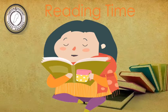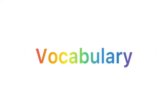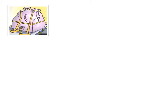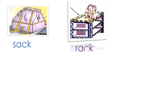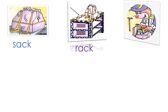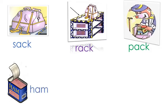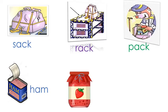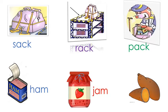In the beginning, let's review the words that we learned last time. Are you ready? That's great. Let's start with the first word: Sack. Rack. Where is the sack? The sack is on a rack. Pack. Ham. Jam. And the last word — do you remember it? Great. Yam.